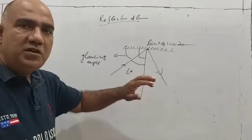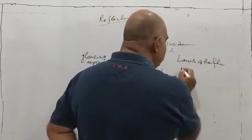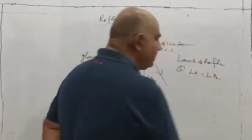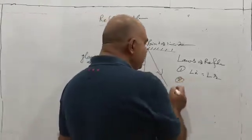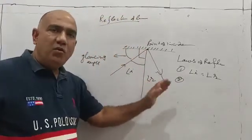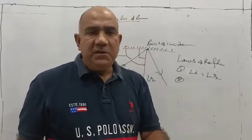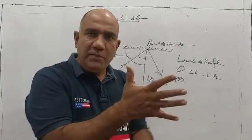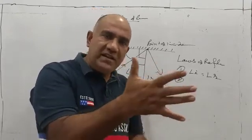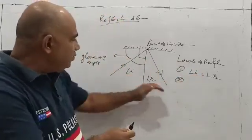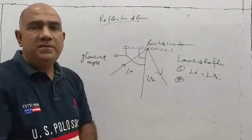Now we will come to the laws of reflection. Law one: the angle of incidence is always equal to the angle of reflection — these two angles are always the same. Law two: the normal, incident ray, and reflected ray all lie in the same plane. This is most widely misunderstood. What it means is that if you represent them on a board, all of them can be represented lying flat on that surface — none of them enters into the board or comes out of the board.